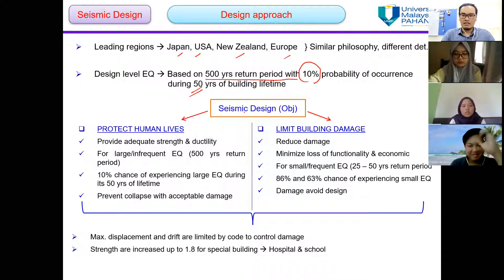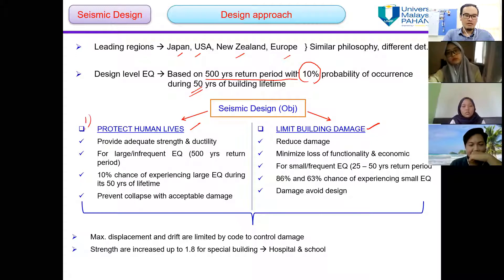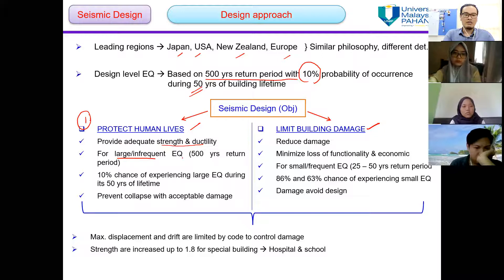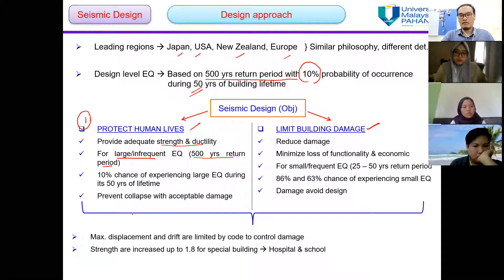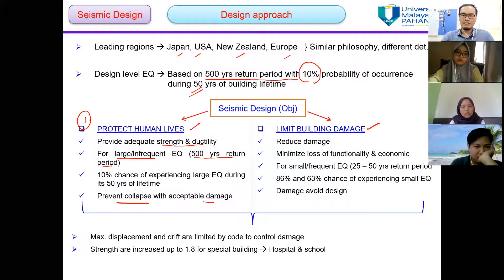There are two objectives of seismic design. The first is to protect human life, and the second is to limit building damage. For the first objective, we provide adequate strength and ductility. This applies to large or infrequent earthquakes with a 500-year return period, where the magnitude will be quite large. The goal is to prevent collapse with acceptable damage — the building may be damaged, but we must prevent collapse to protect human life.